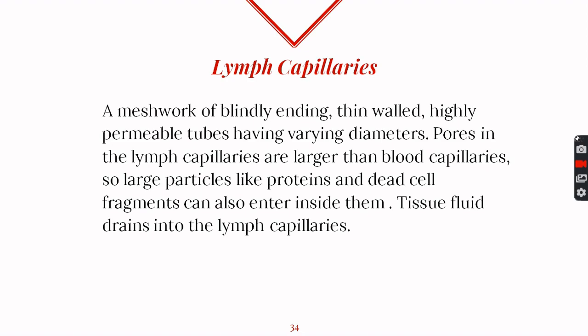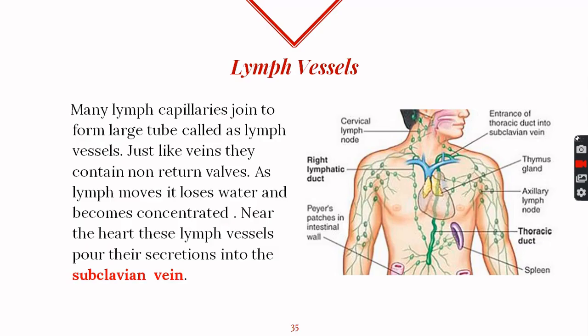Lymph capillaries then join to form larger or wider vessels called lymph vessels. As lymph moves through these lymph vessels, it keeps on losing its water and becomes more and more concentrated. Lymph vessels are also provided with valves to prevent any backflow of lymph. When these lymph vessels reach closer to the heart, they pour all their contents into the blood vessel called the subclavian vein, located just below the collar bone.